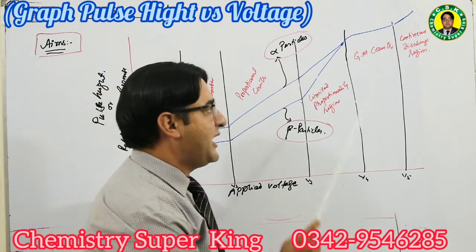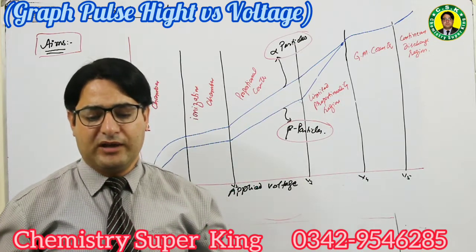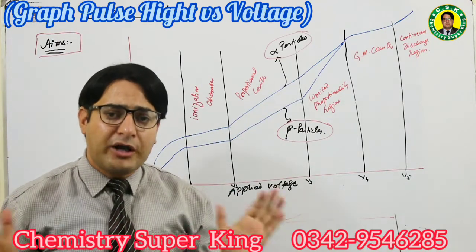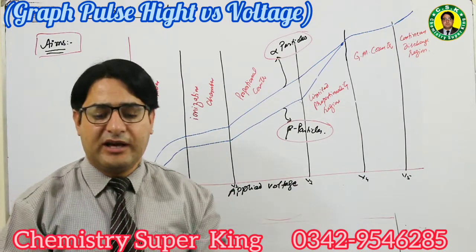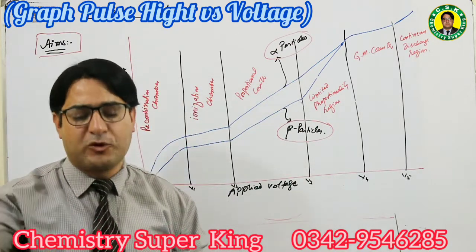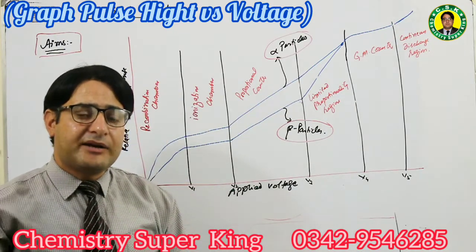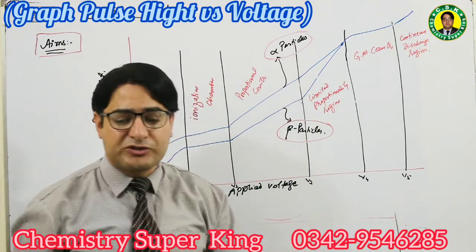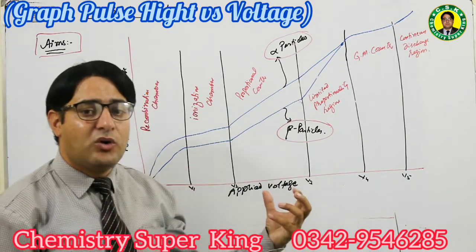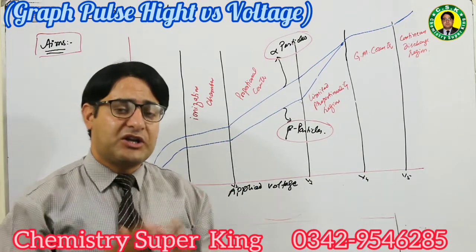Beyond V5, when voltage increases further, the filler gas starts to ionize by itself even without any nuclear particle entering the detector. The gas spontaneously ionizes and produces a continuous discharge, making the detector non-functional for detection purposes. Pulse height is no longer related to nuclear particle energy.